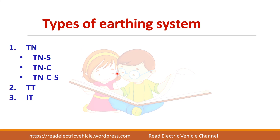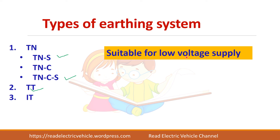We have seen different types of earthing systems: TN, TT, and IT. The TNS, TNCS, and TT systems are normally preferred for low voltage supply. The IT system and TNC system are not as safe, so they are normally not preferred for low voltage supply.